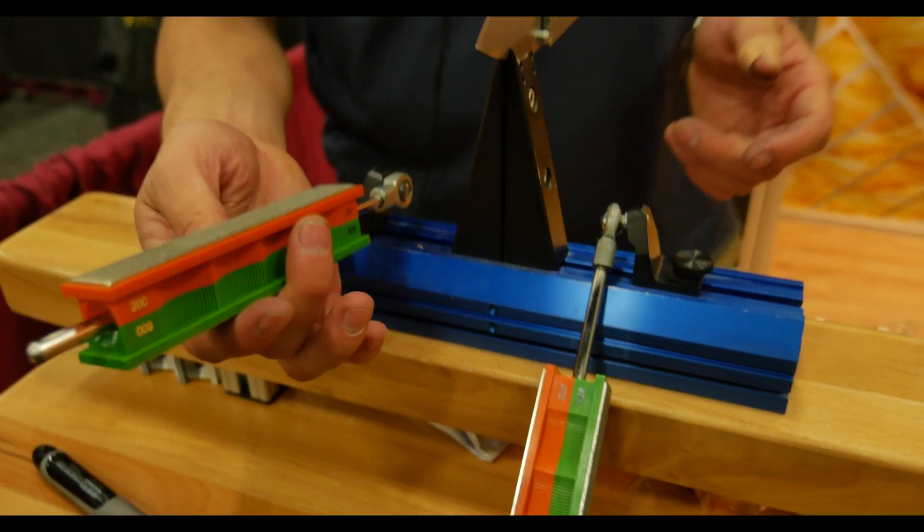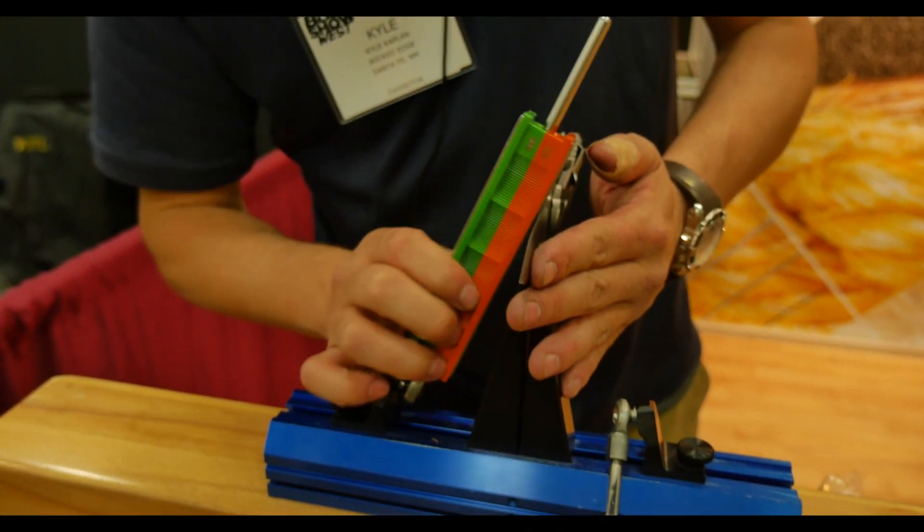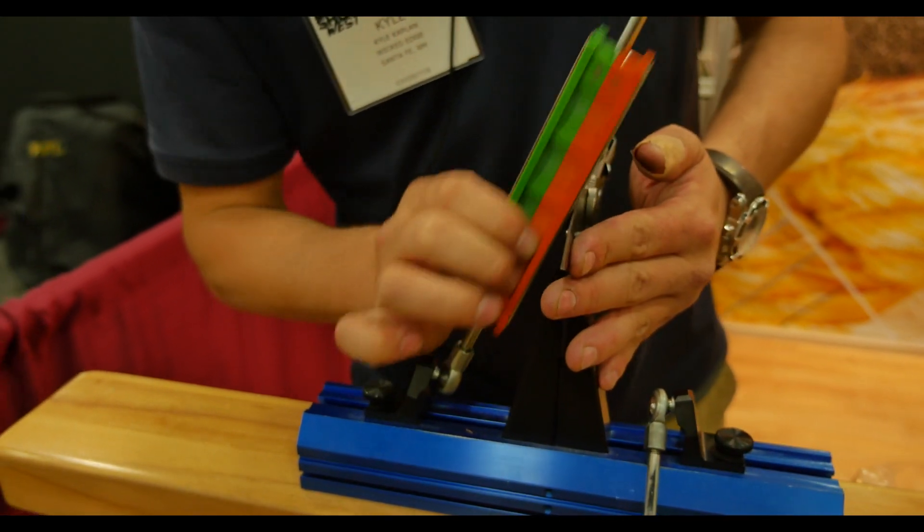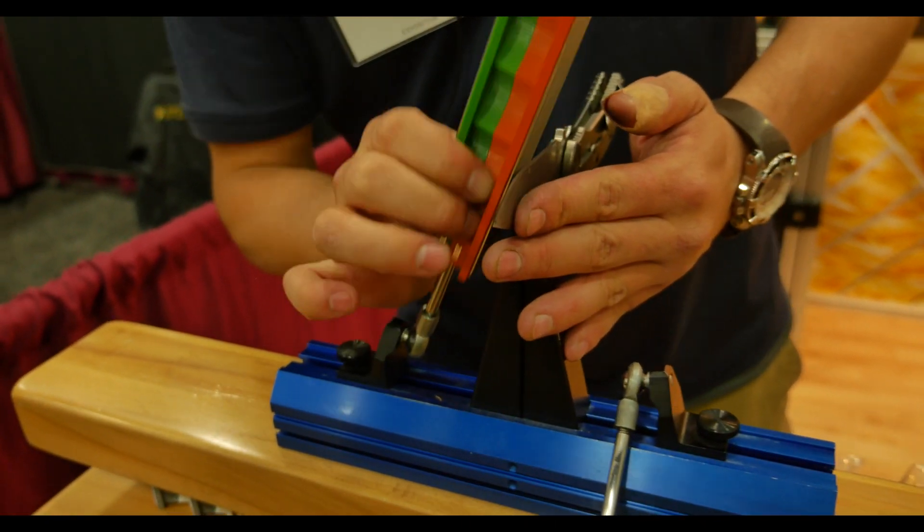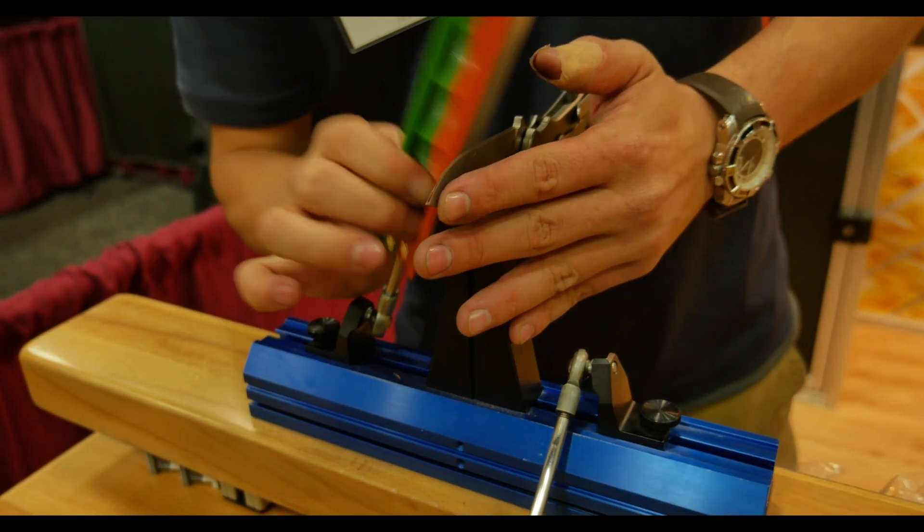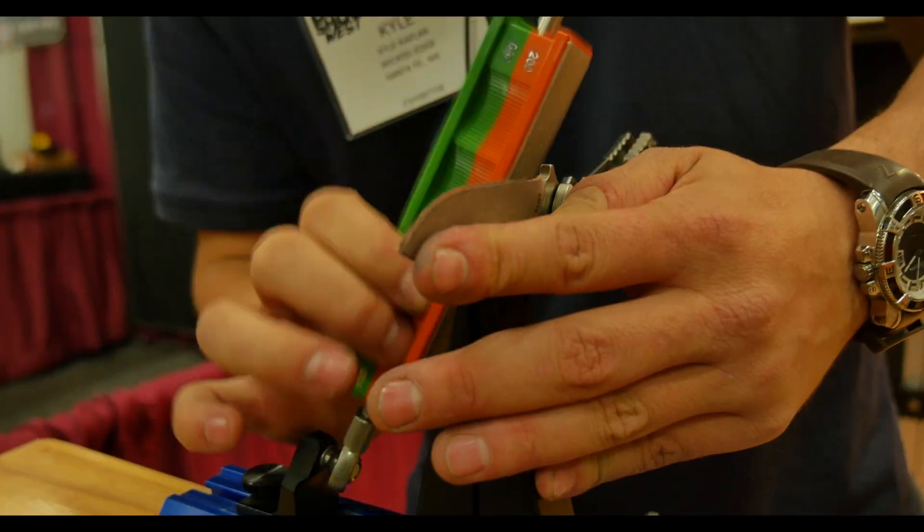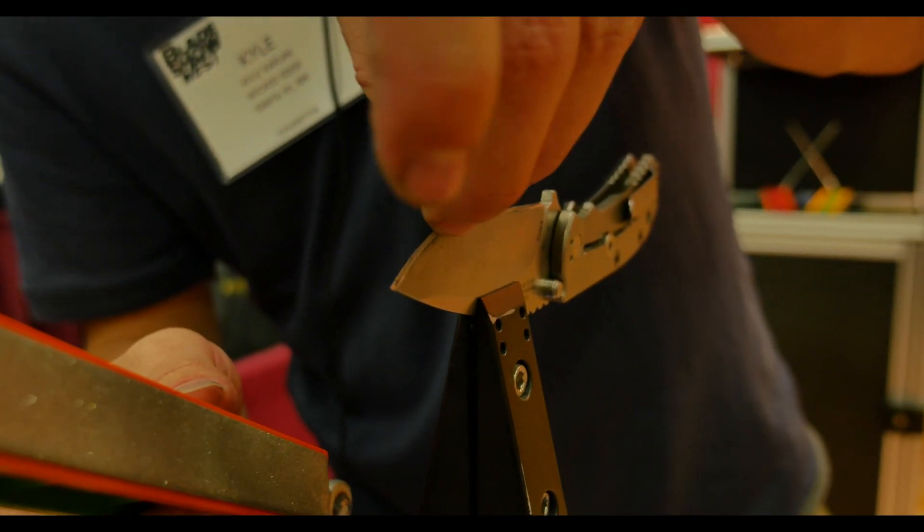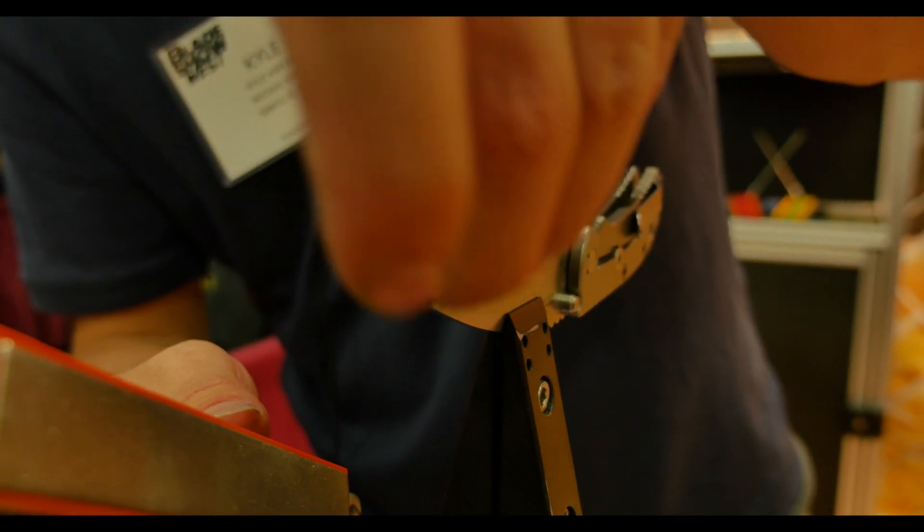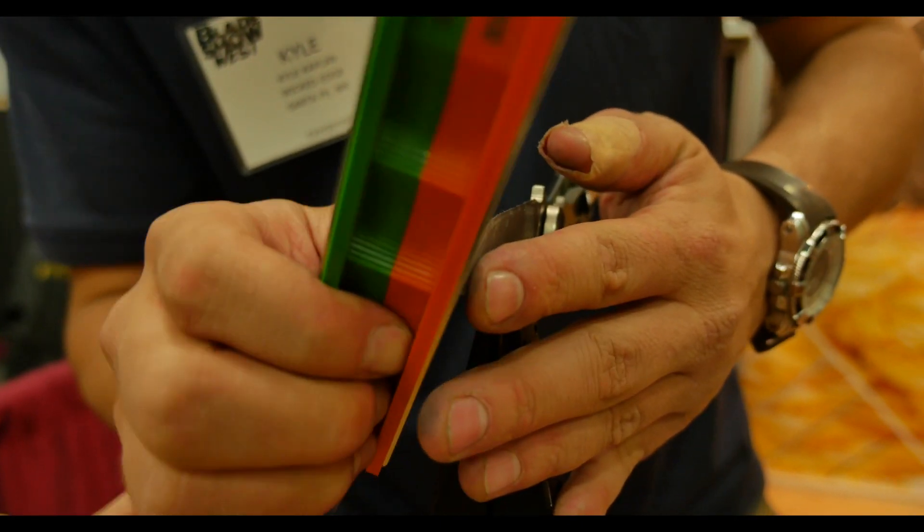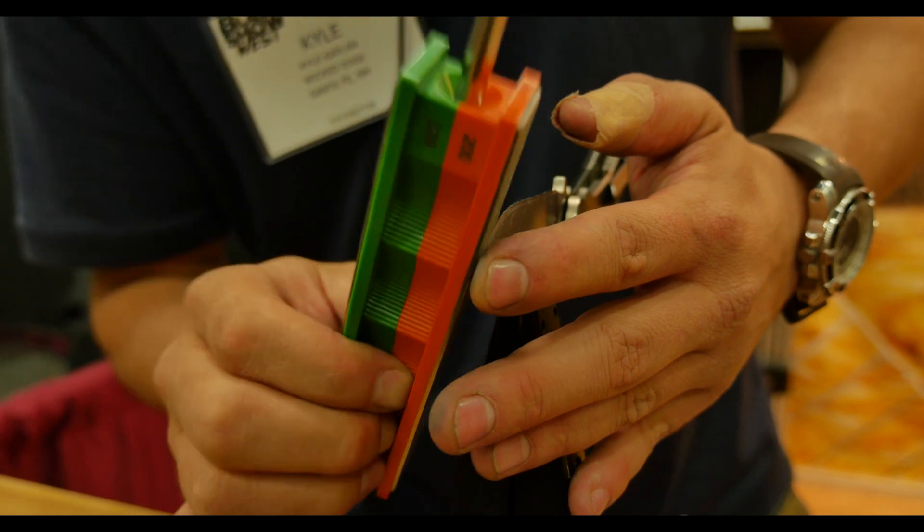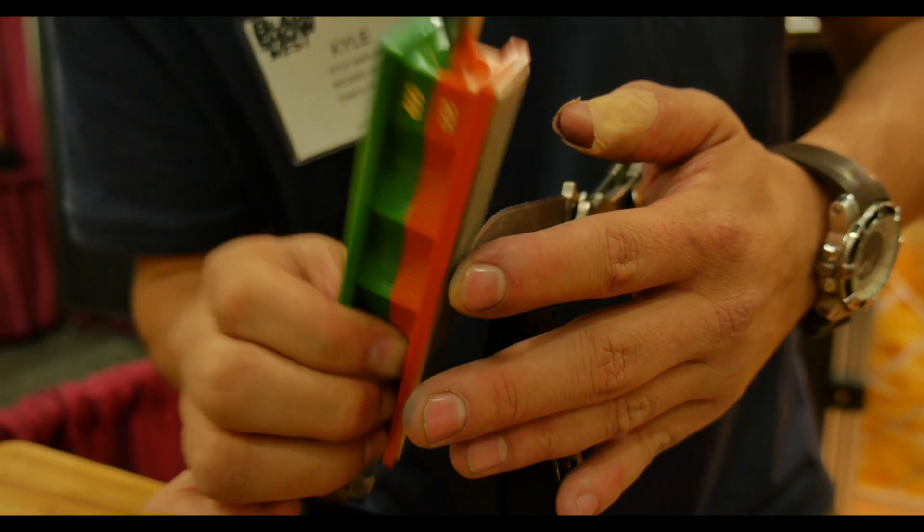So once I start sharpening I'm just going to use the 200 grit now. And I'm just going to start a scrubbing motion. And I'm going to draw a burr off the opposite side, which I'll feel here with my finger. And once the burr's found you know that your edge is reaching the apex and your stone is reaching the apex.